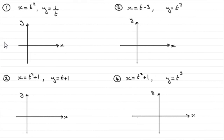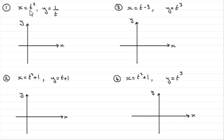This is the second in my series on sketching graphs of parametric equations, where we're looking at sketching them by considering the behavior of x and y as t varies. In this first example, we've got x equals t squared and y equals 1 over t. As usual, we look at what happens when t is 0. When t is 0, x will be 0, but y is undefined because you can't divide by 0.